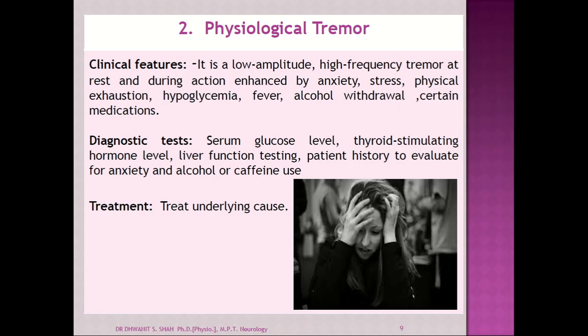Second is the physiological tremor. It is most commonly a low-amplitude but high-frequency tremor at the wrist during action. It is enhanced by stress, anxiety, physical exhaustion, hypoglycemia, fever, sudden alcohol withdrawal, or certain medications. To diagnose this tremor, you must evaluate serum glucose level, thyroid stimulating hormone level, liver function tests, and patient history for anxiety, alcohol, or caffeine use. Treatment will be according to the cause — we must identify the underlying cause and treat that.